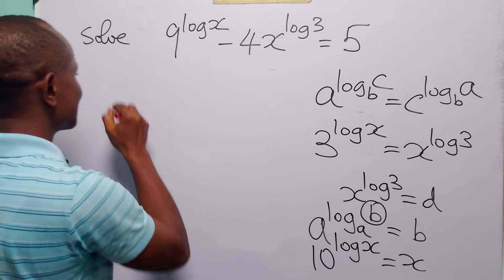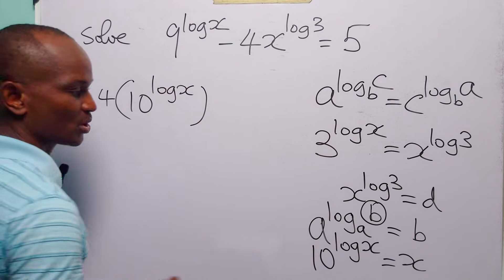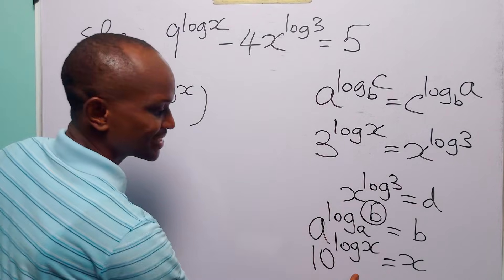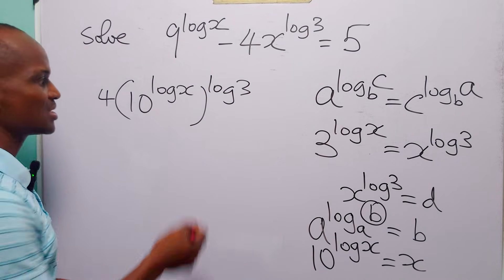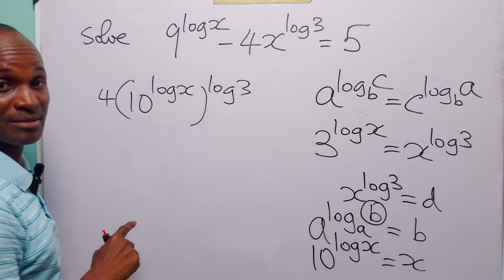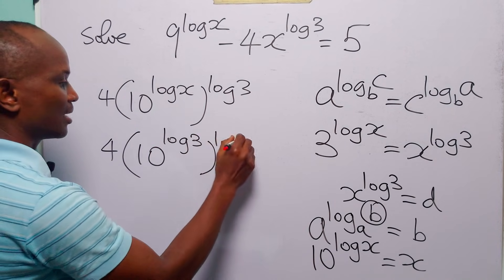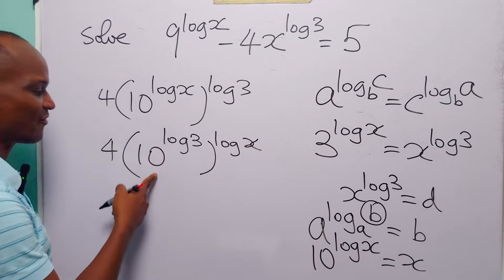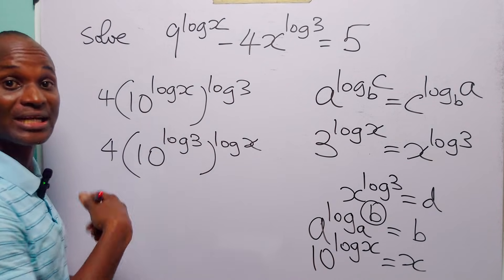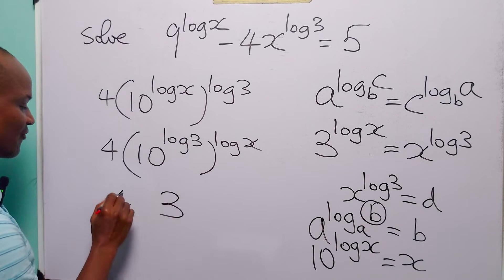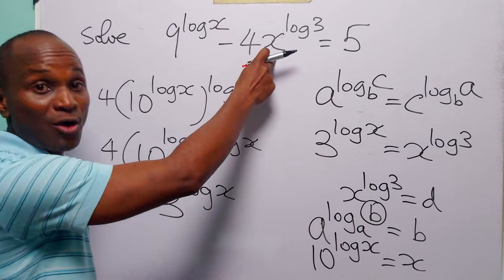So 10 to the power log x is equal to x. We can rewrite the second term as 4 times 10 to the power log x, all raised to the power log 3. Once more, when I switch the places of these two powers, I have 4 times 10 to the power log 3. According to the identity, 10 to the power log base 10 of 3 is equal to 3, so this becomes 4 times 3 to the power log x.